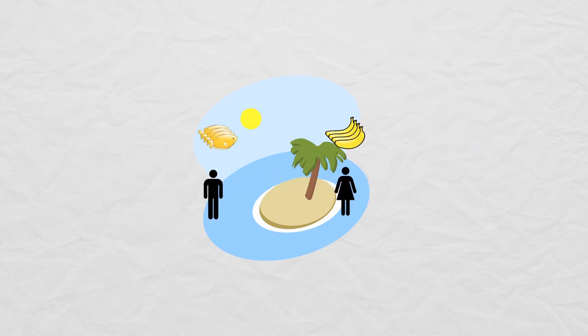Since Jane is better at picking bananas and Gilberto Rahul is better at catching fish, they can each be better off if they specialize in what they're good at and trade for what they're not.